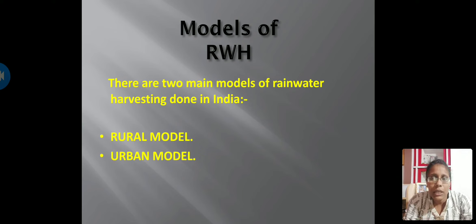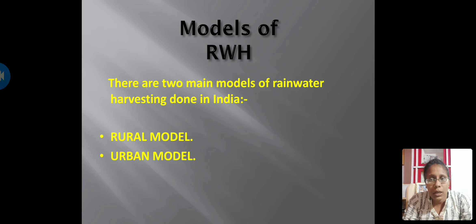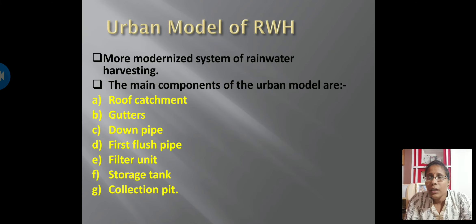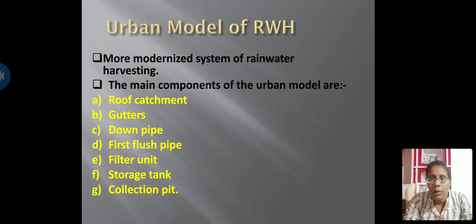There are basically two main models of rainwater harvesting done in India: the rural model, which is the traditional method, and the urban model, which is the modern method. In today's class we are going to see the urban model. Urban RWH — rainwater harvesting — is a more modernized system.